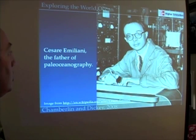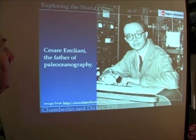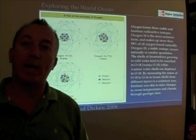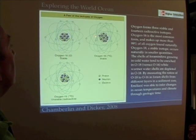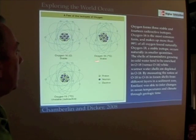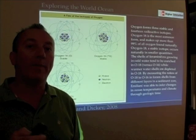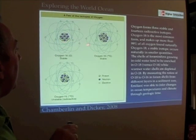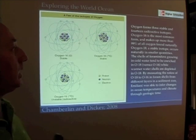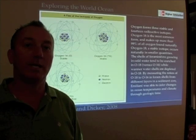Here is Cesar Emiliani, the father of paleoceanography — you can look him up on Wikipedia; he has a fascinating history. Here are the isotopes of oxygen. If you go back to chapter 2 and review this figure, it will help you understand the different kinds of oxygen isotopes. Here we have oxygen-16, which is the normal regular state, and oxygen-18, a stable isotope of oxygen. It's really these two that are used to figure out what the seawater temperature was — by looking at the ratio of oxygen-16 to oxygen-18, we can tell something about the temperature of the water in which that shell formed.